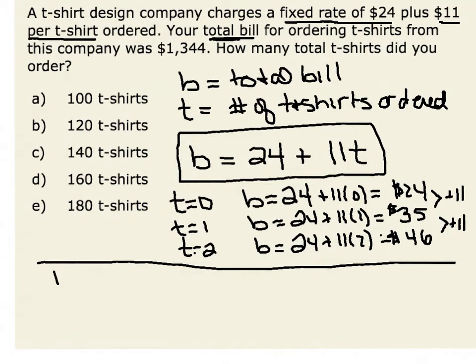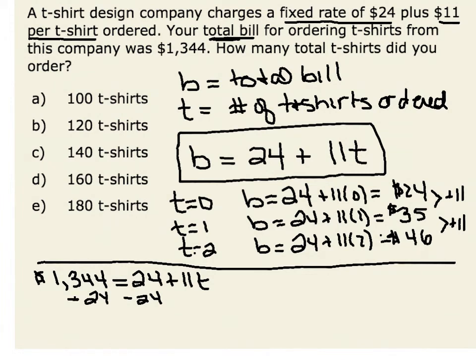We know that our total bill was $1,344 and we want to know how many t-shirts we ordered. Therefore, we are going to solve the equation: 1,344 is equal to 24 plus 11t. The first thing we can do is subtract 24 from both sides. When we subtract 24 from both sides, we get 1,320 is equal to 11 times t. Now we can divide both sides by 11 to solve for t, and we get t is equal to 120. Therefore, we ordered 120 t-shirts.